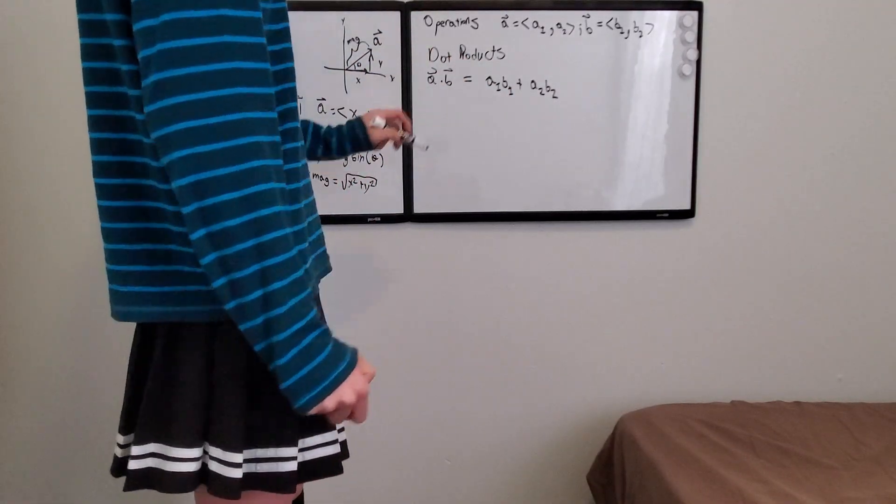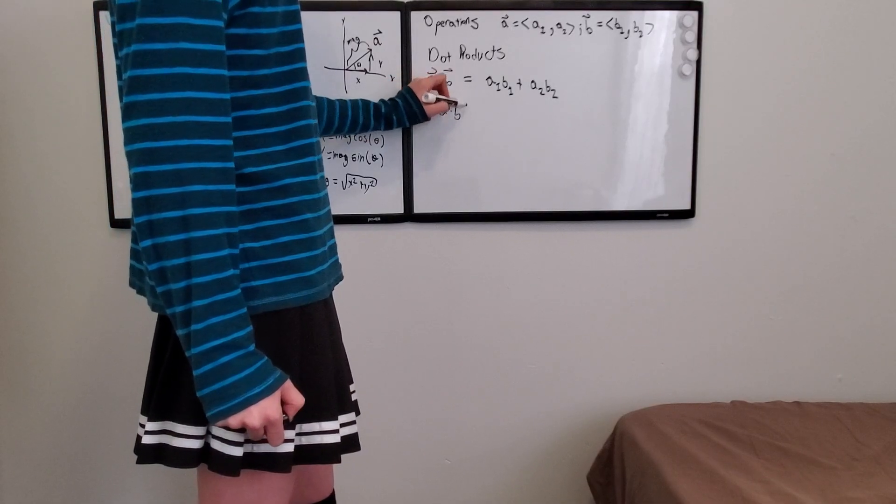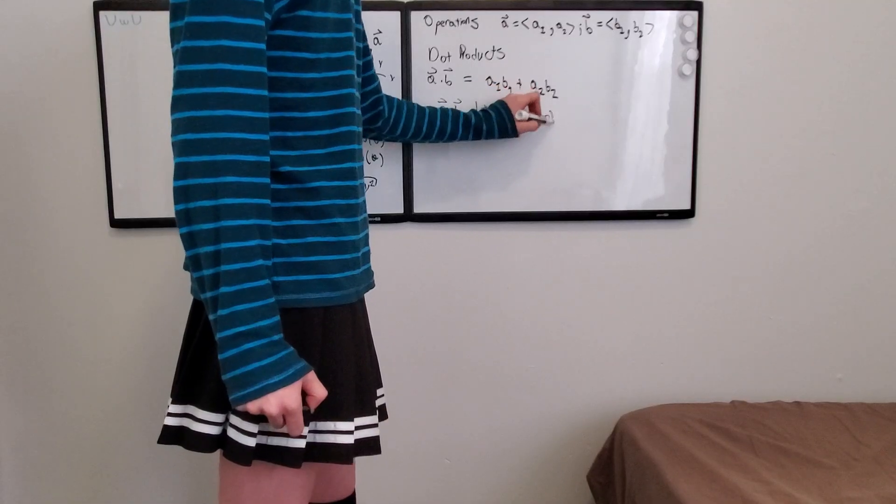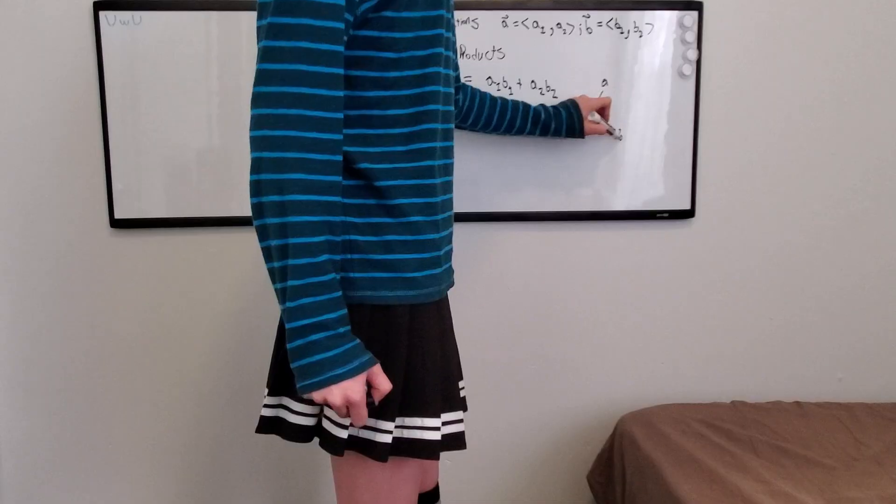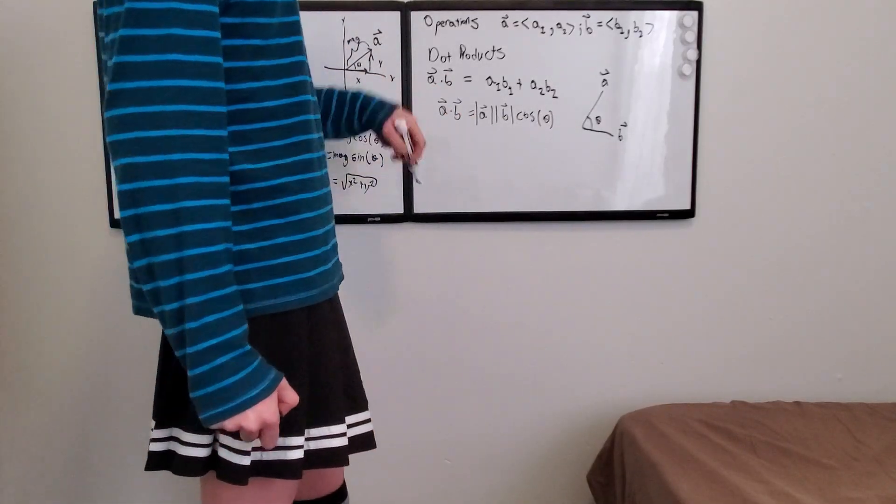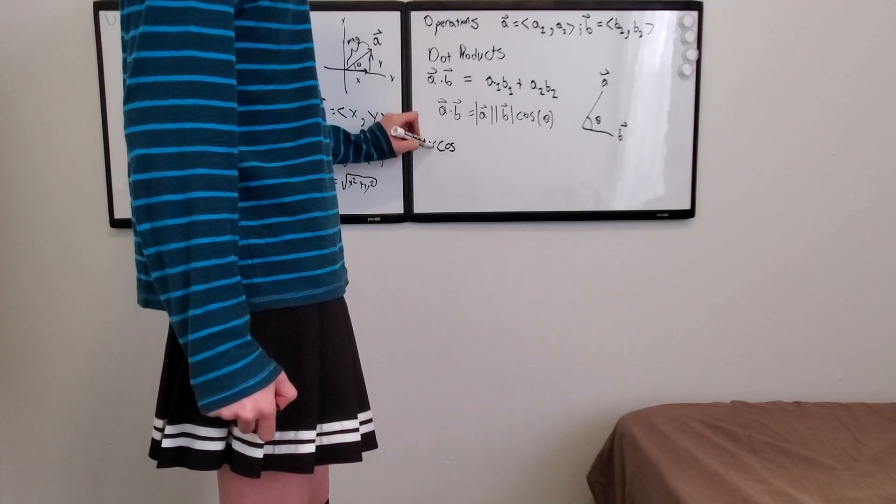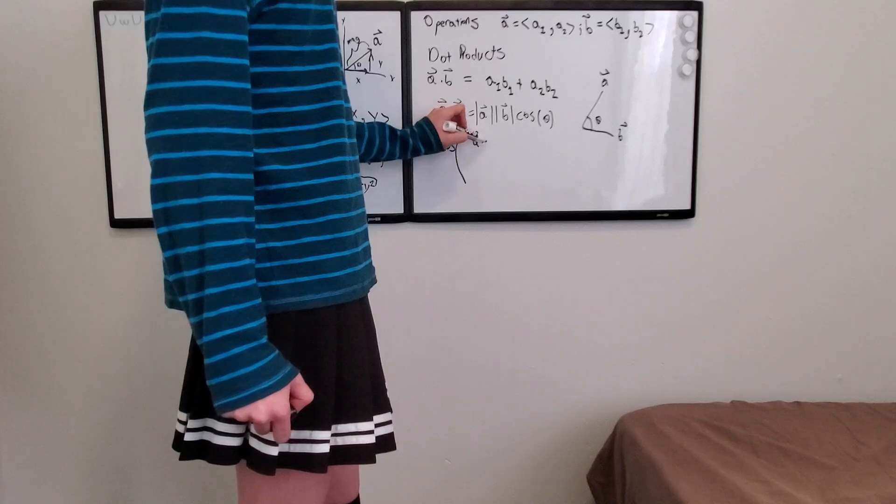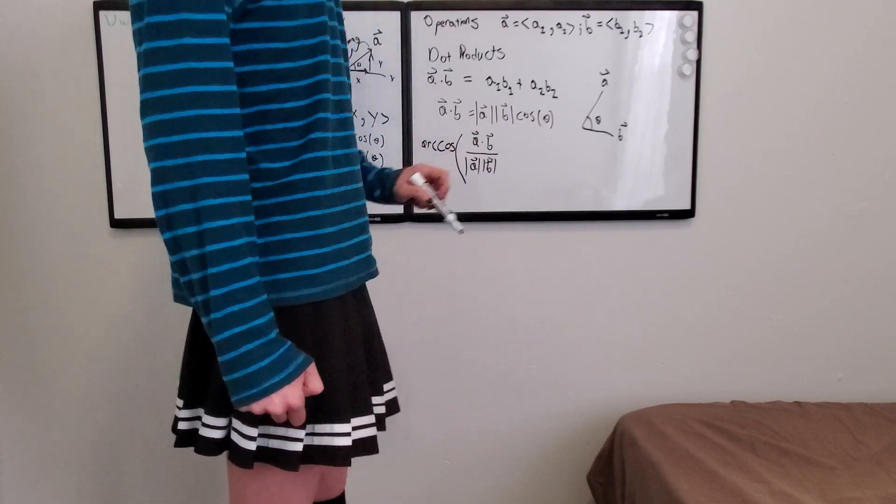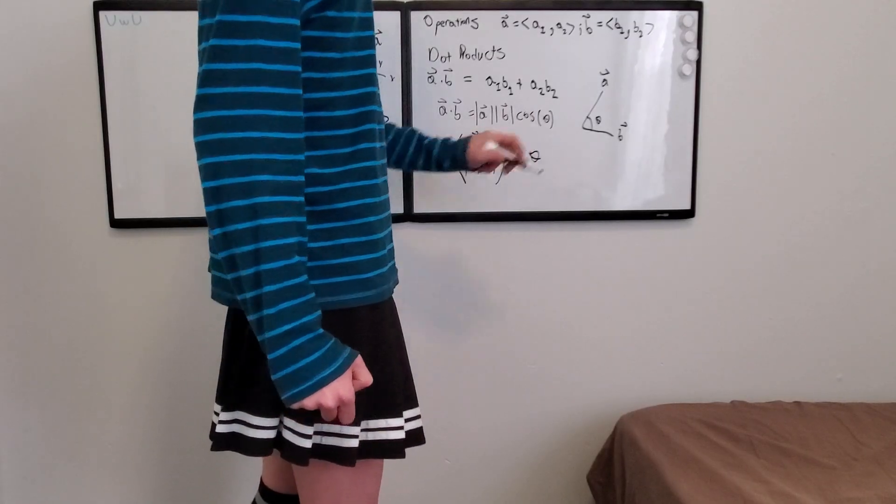So you can do some cool things with dot products. Like for example, you can use this theorem: A vector dot B vector is going to be equal to the magnitude of A times the magnitude of B times the cosine of the angle in between them. So if you have two vectors A and B, then they have an angle in between them. And you can find it using this formula, just by solving for theta. And when you solve for theta, you get arc cosine of A dot B divided by magnitude A times magnitude B. This is a number divided by a number. I'm taking the arc cosine, and that'll give you the angle theta in between these two vectors.